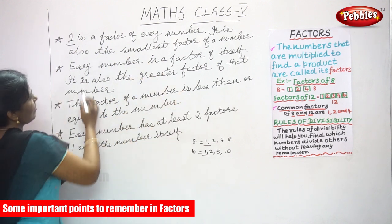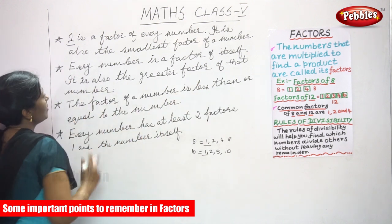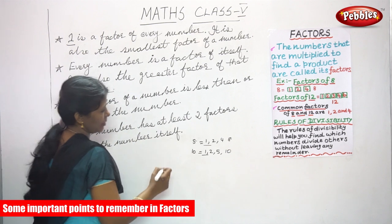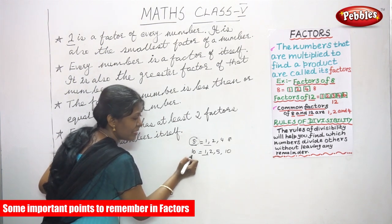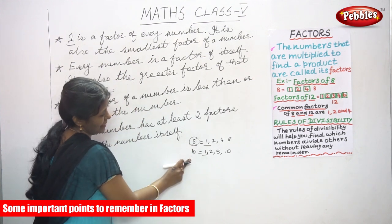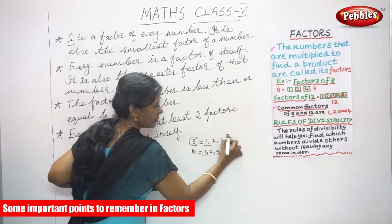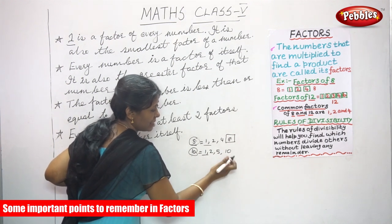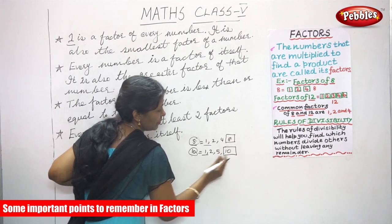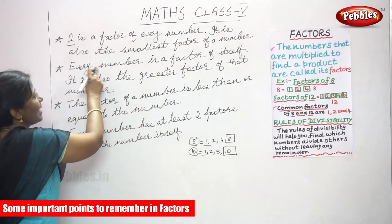The next point to remember: every number is a factor of itself, and it is also the greatest factor of that number. For example, taking the same numbers eight and ten — the factors of eight are one, two, four, and eight. The same number, eight, appears as a factor. Similarly for ten: one, two, five, ten — the same number ten also comes as a factor.